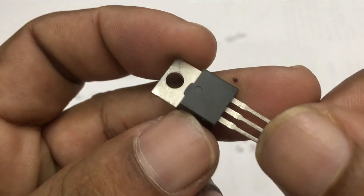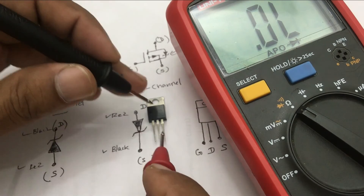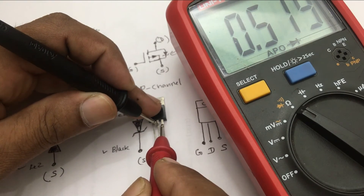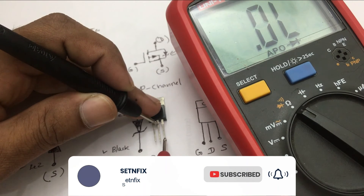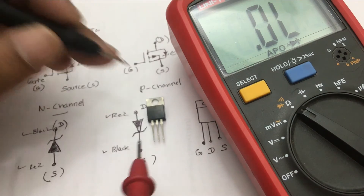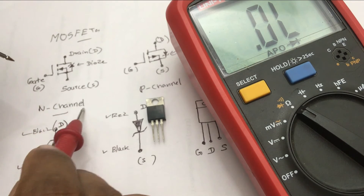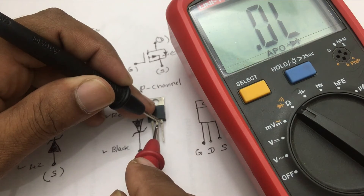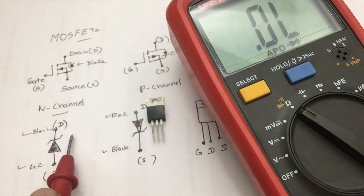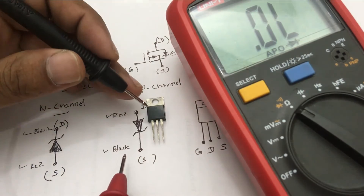Change your multimeter to diode mode. I have an N-channel MOSFET — this is an IRF-640N MOSFET. I am going to test it using the multimeter. First I connected the red probe to source and the black probe to drain — you can see there is a reading. Then I changed the probes: red to drain and black to source — you can see there is no reading. This MOSFET shows N-channel behavior. However, as I said, we cannot fully confirm testing since we have not checked the gate pin. We confirm that the source and drain pins are okay and that this is an N-channel MOSFET.